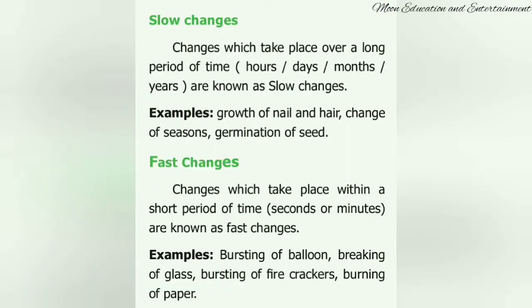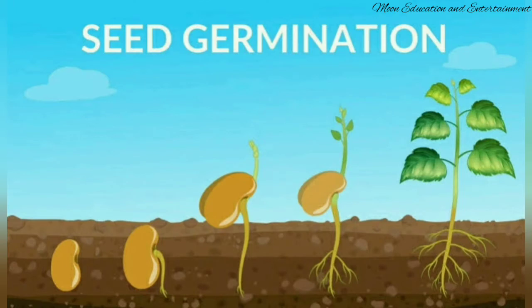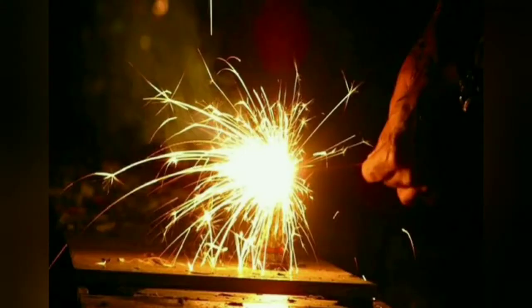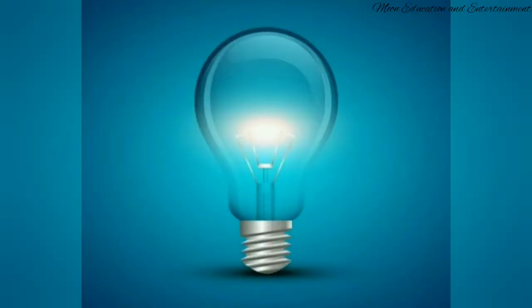Slow changes and fast changes. A slow change is one which takes place over a long period of time — it may take hours, days, months, or even years. But fast changes take place within a short period of time, in seconds or minutes. For example, seed germination and growing of hair are examples of slow change, while bursting of crackers and lighting of a bulb are fast changes.